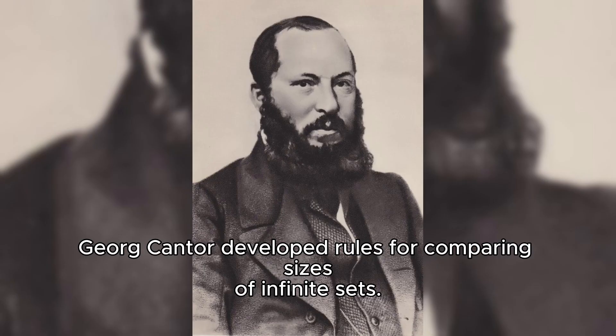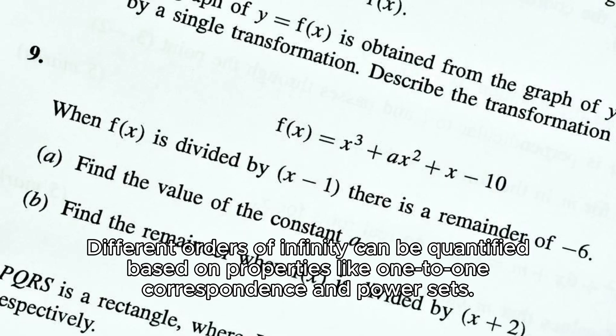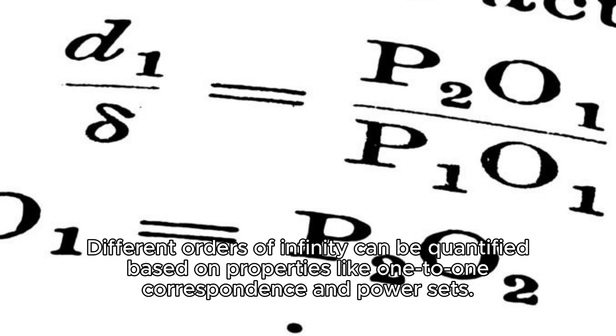Georg Cantor developed rules for comparing sizes of infinite sets. Different orders of infinity can be quantified based on properties like one-to-one correspondence and power sets.